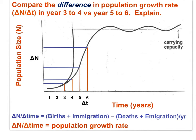Comparing the population growth rate — the change in population size over time — between year 3 to 4 versus year 5 to 6: the number added from year 3 to 4 is less than the number added from year 5 to 6, both being one-year periods. The explanation for this difference in delta N over delta T is that the size of the population is getting larger, so the multiplier is being multiplied against an ever-larger number.